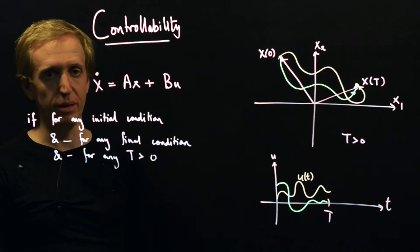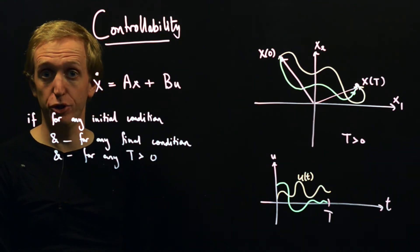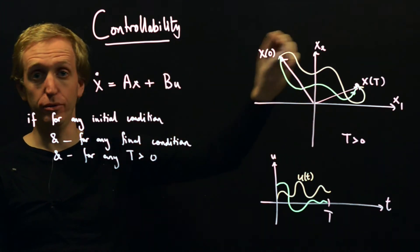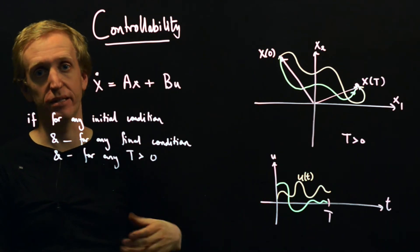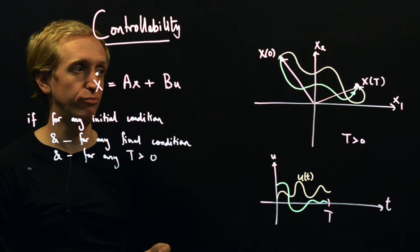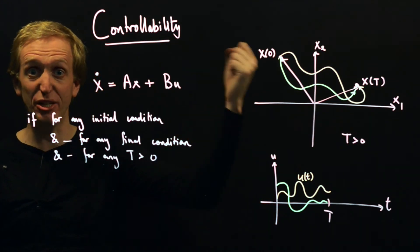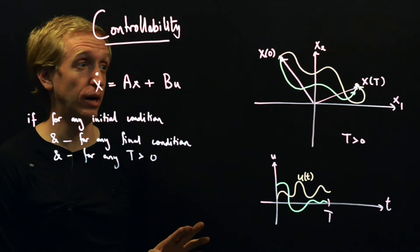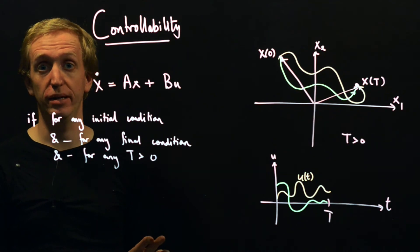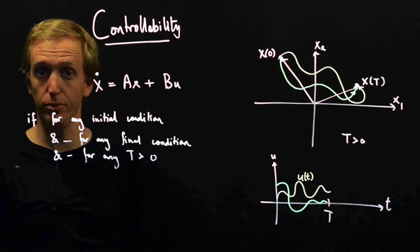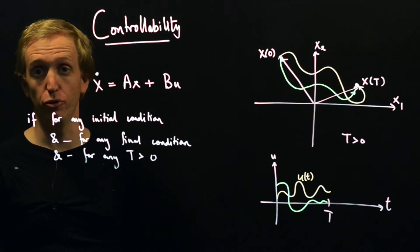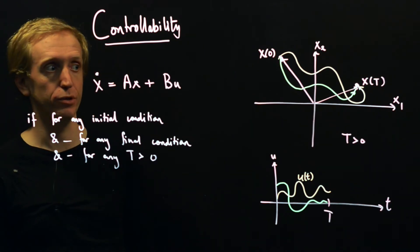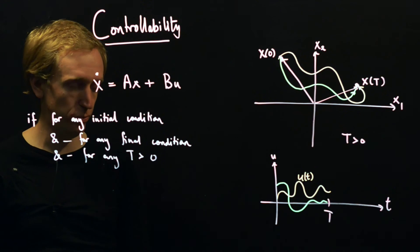Conversely, maybe you could say starting at the origin, can I get to any point in the state space? And this concept sometimes called reachability is a state reachable from the origin. But it turns out these concepts are completely equivalent. So if a system is controllable, it's controllable to the origin and vice versa. If a system is controllable to the origin, it's also controllable, and the same with reachability.